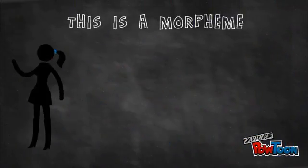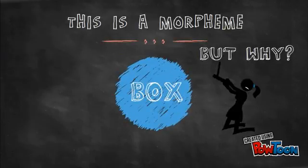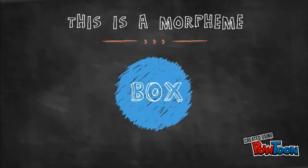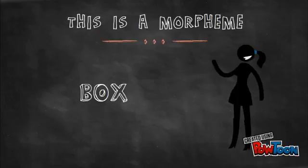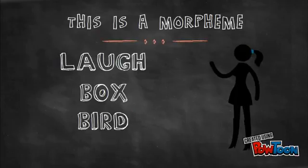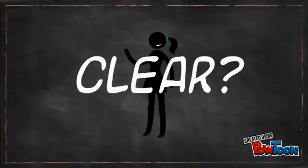Now, let me show you. This is an example of a morpheme: box. You might be wondering, why is that a morpheme? Well, you see, a morpheme is a self-standing word, or a word that cannot be split into another word. Other examples could be laugh or bird. Now, is everything clear?